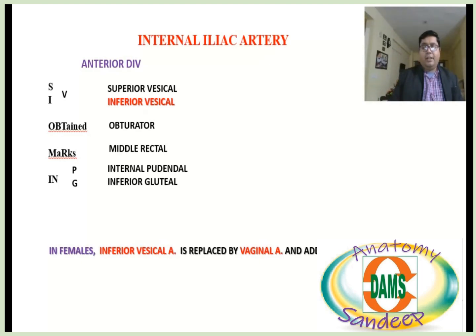In females, the inferior vesical artery is replaced by the vaginal artery, and additionally the uterine artery is present. These are the branches from the anterior division.